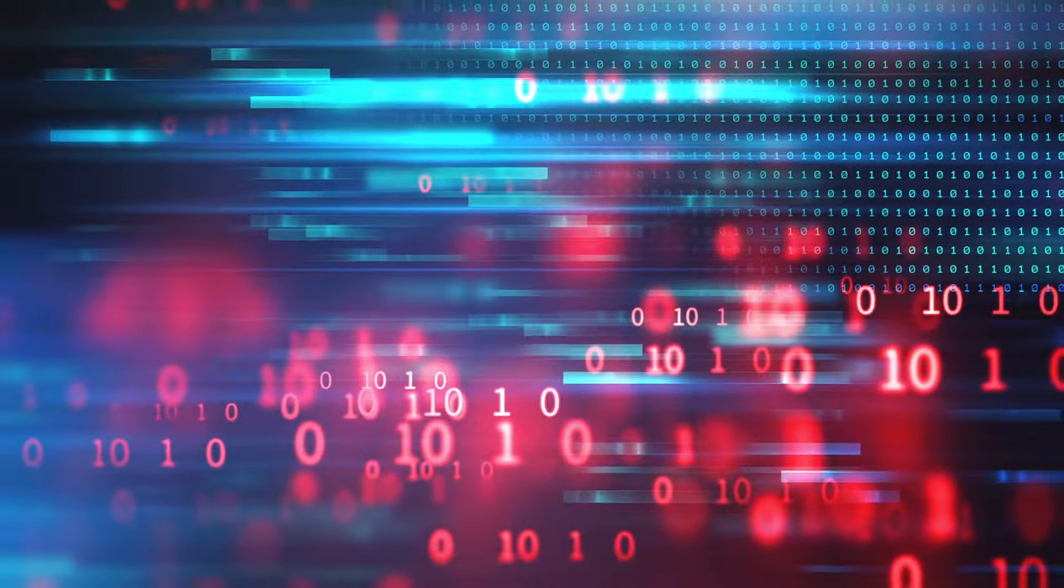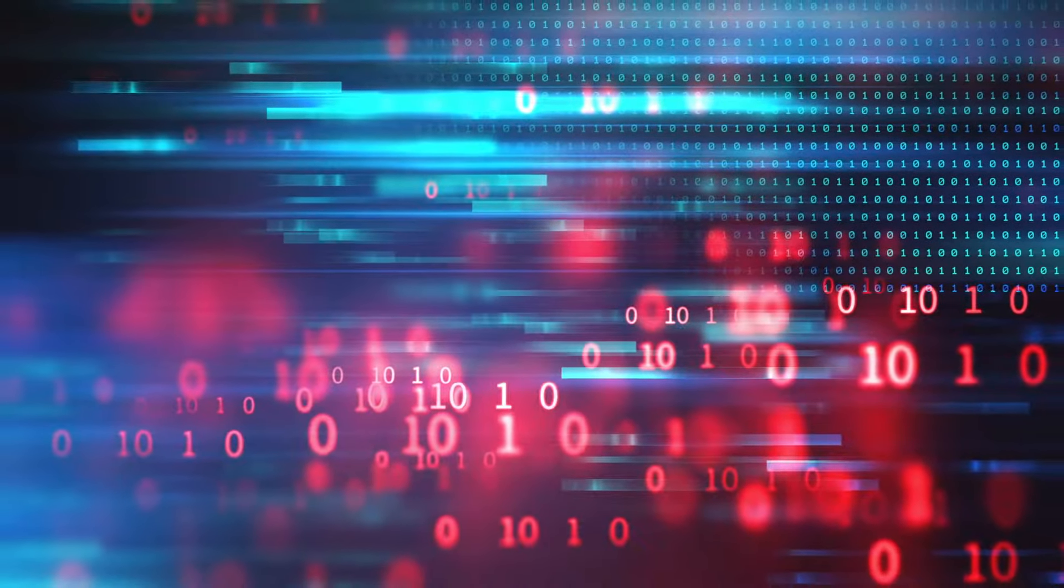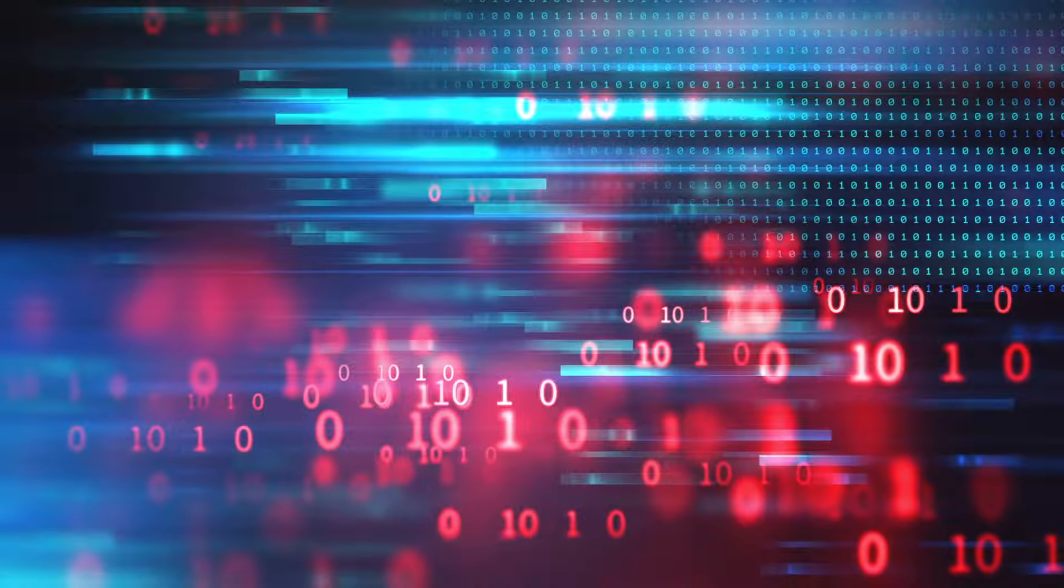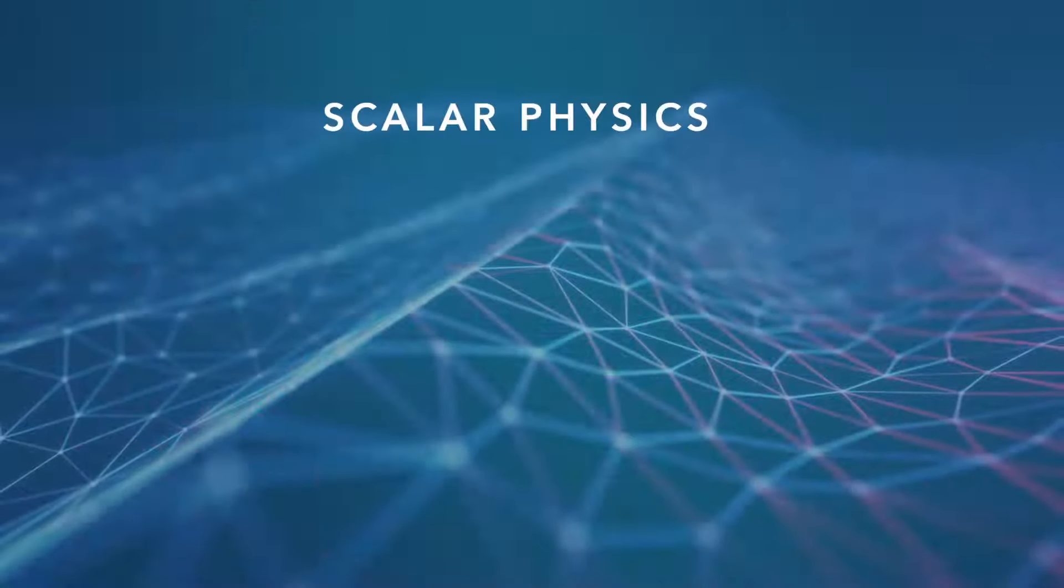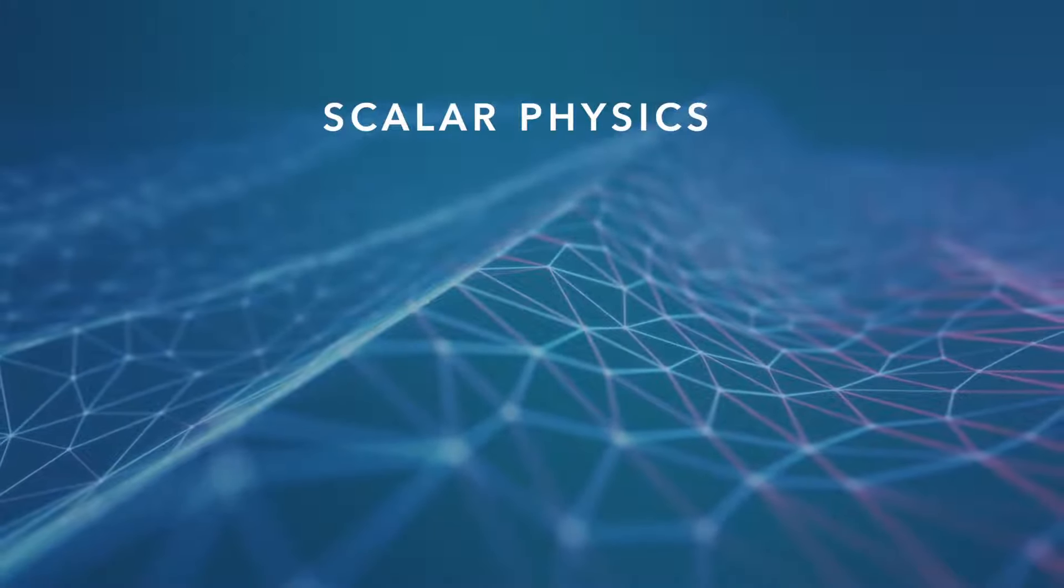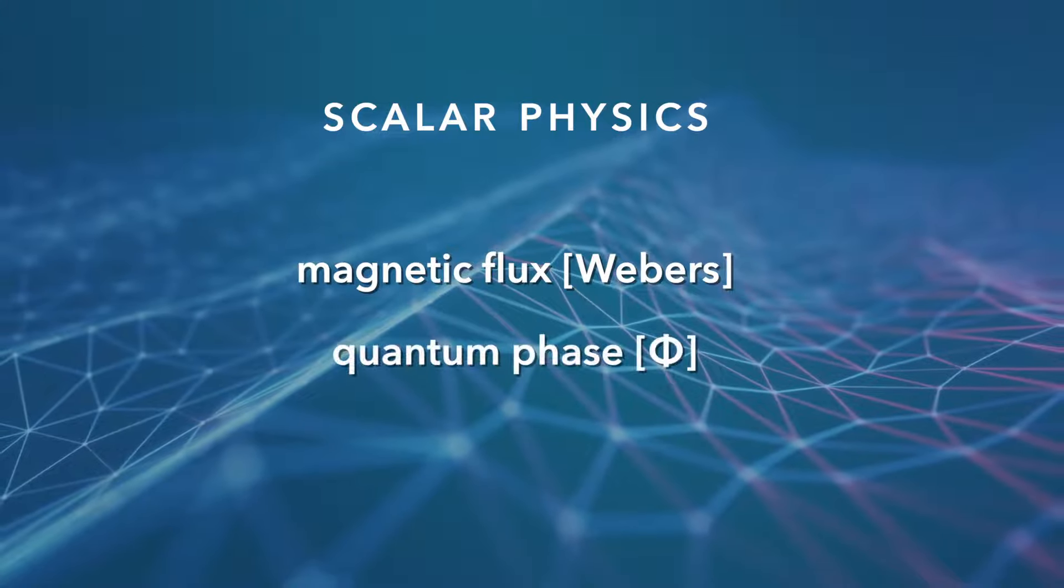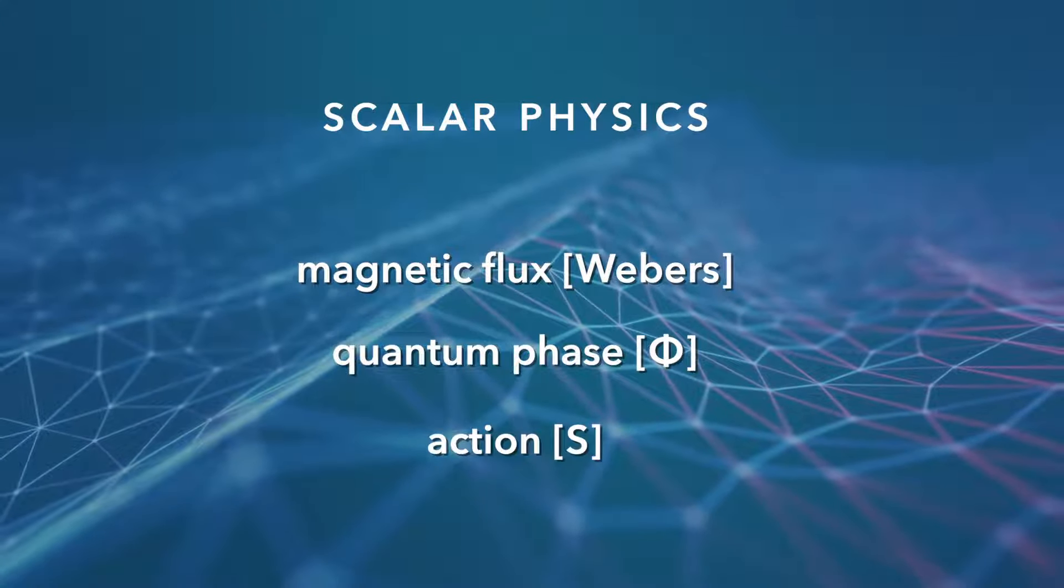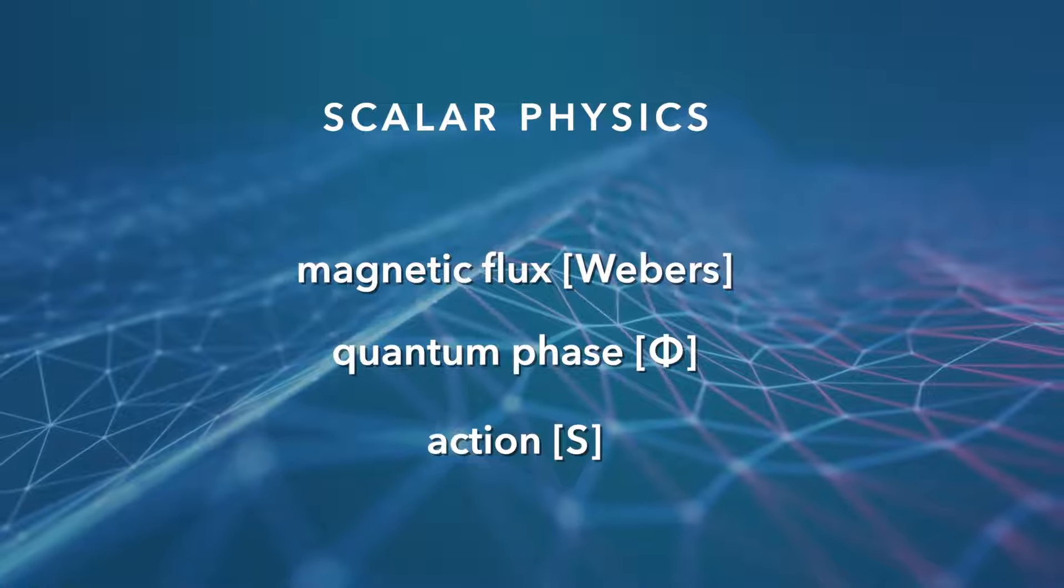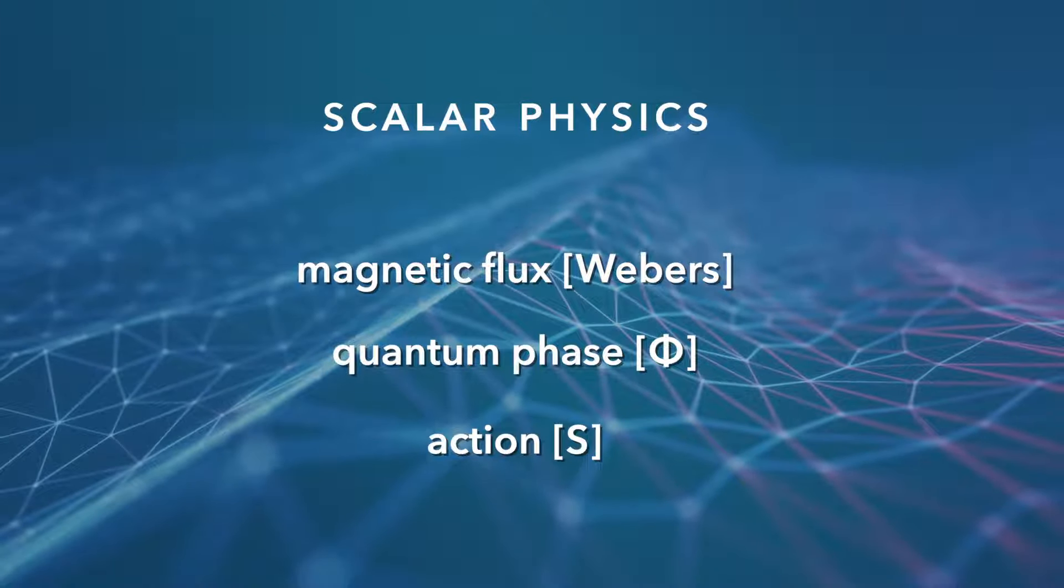What distinguishes one scalar field from another, then, comes down to what exactly is being measured. In scalar physics, the scalar field is measured in units of magnetic flux, or quantum phase, or action, depending on how you want to interpret it. But that's getting ahead of ourselves, so let's continue.